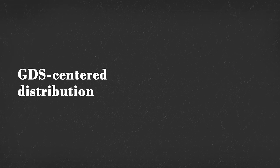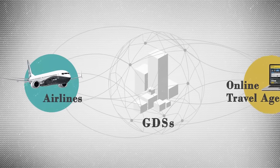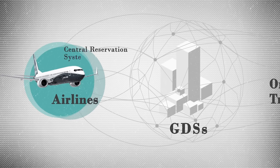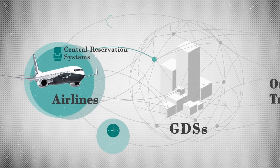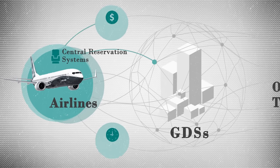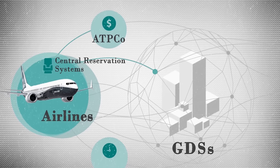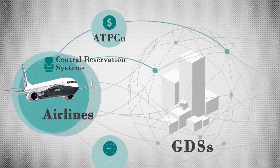So, how exactly does GDS-centered distribution work? GDSs are normally connected directly to the heart of airline sales technologies — Central Reservation Systems, or CRSs. A CRS is a software program that manages seat reservations on the airline side once a GDS requests a seat. But this connection channel doesn't cover scheduling information and pricing.